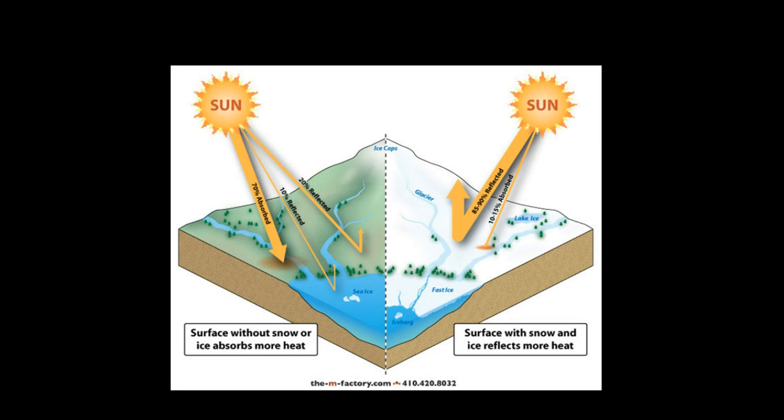Secondly is the Earth's reflectivity, called albedo, A-L-B-E-D-O. So the second factor is the Earth's reflectivity, which we call albedo. Get that in your notes. Now the albedo, or reflectivity, changes depending on where the sun's rays hit.